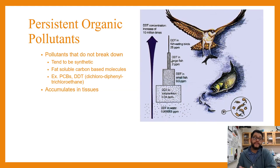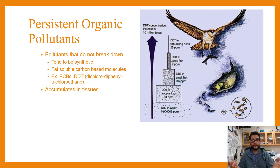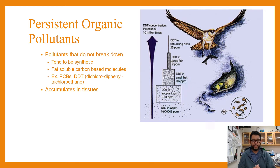A persistent organic pollutant is exactly what the name says: it's something that persists in the environment, lasts for a long time, it's organic meaning it's a carbon-based molecule, and it's a pollutant released into the environment. The classic example we'll be mentioning is DDT — dichloro diphenyl trichloroethane — a very famous pesticide used for a very long time in the United States.